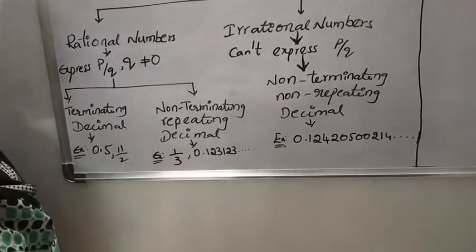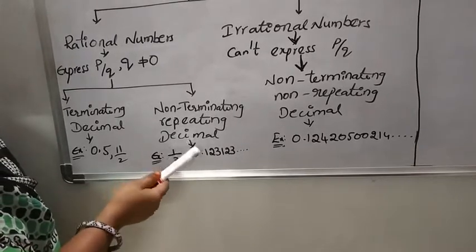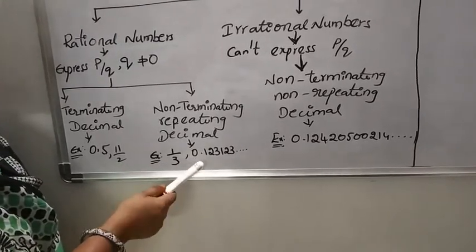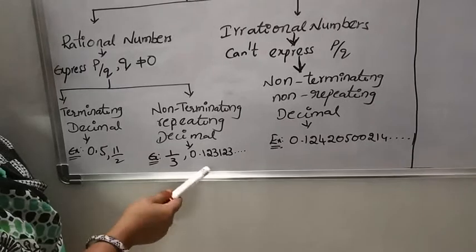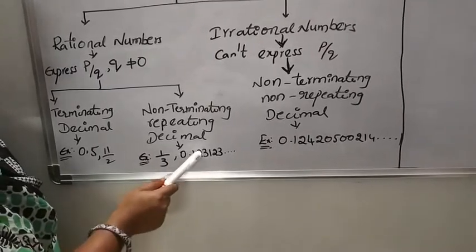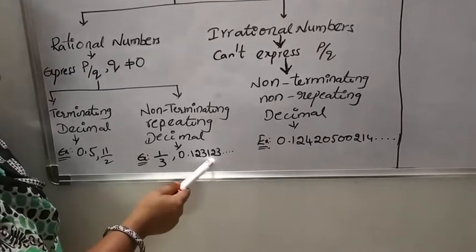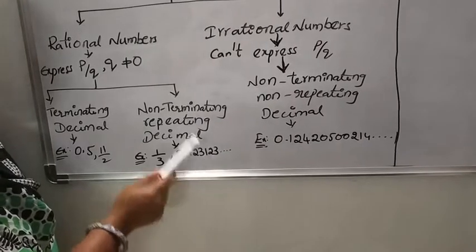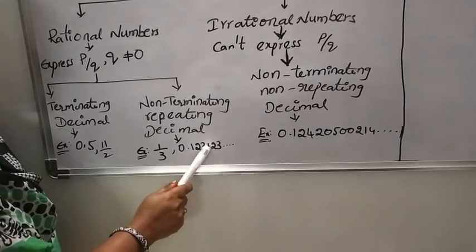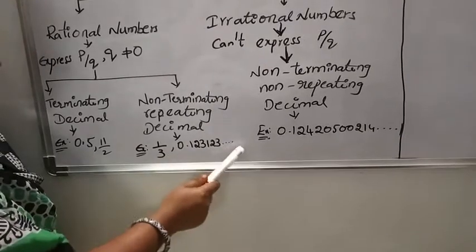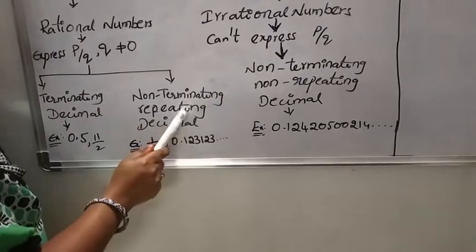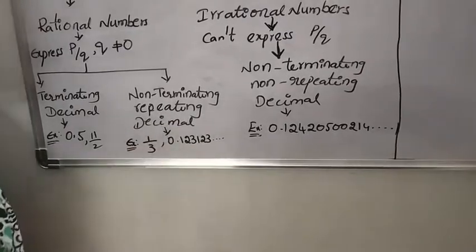Non-terminating repeating decimals: if a number is dividing with another number, at a certain point we are not getting remainder 0 and the process continues. At the quotient, the decimal part has either a single digit or a couple of digits repeating. Such type of decimals are called as non-terminating repeating decimals.